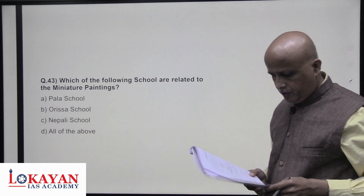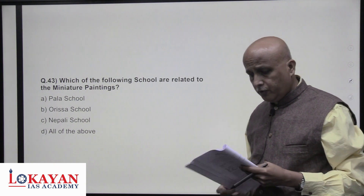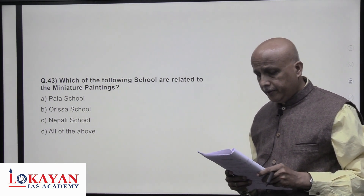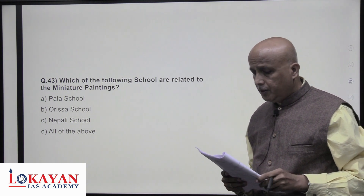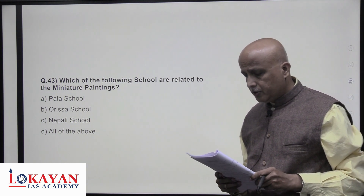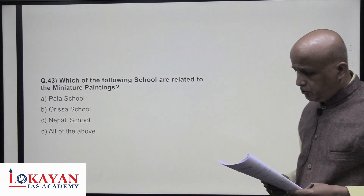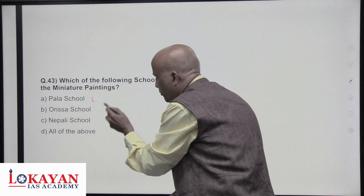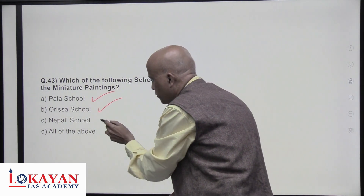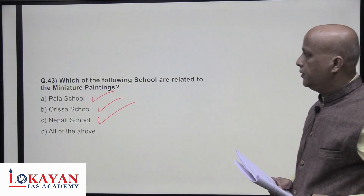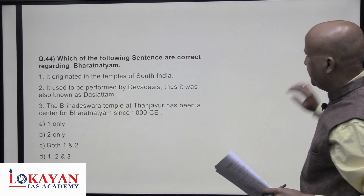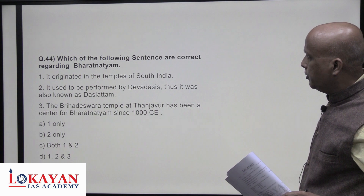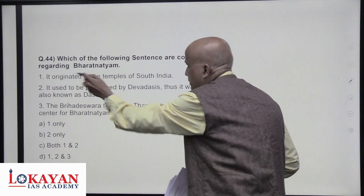Which of the following schools relate to miniature painting? The Pala school, Orissa school, and Nepal school are all part of the miniature painting tradition. Regarding Bharatanatyam — it originated in the running temples of South India, especially the Brihadeshwara temple at Thanjavur, performed by devadasis and thus also called Dasiattam or Sadhir tradition.